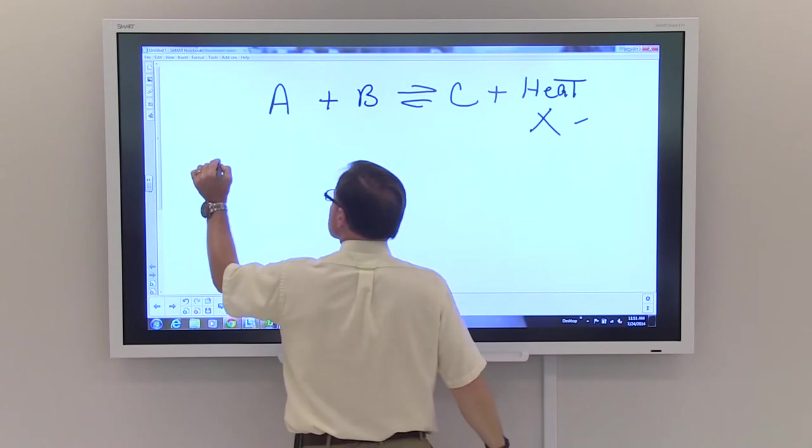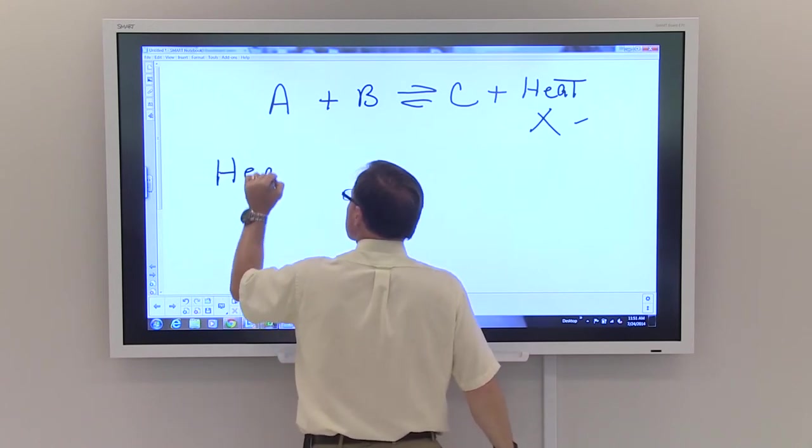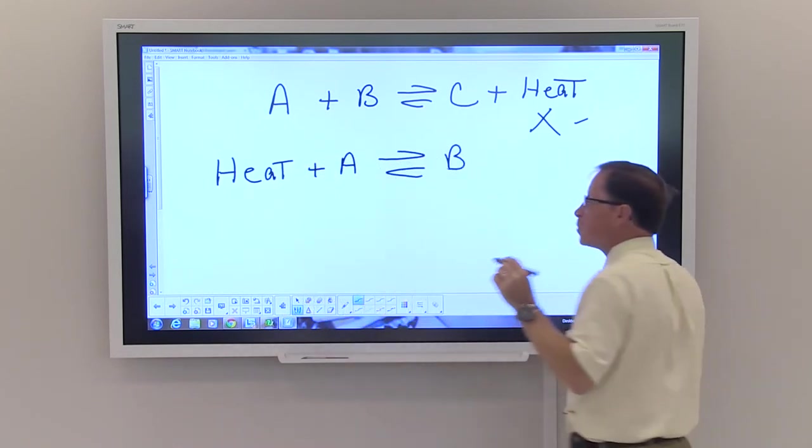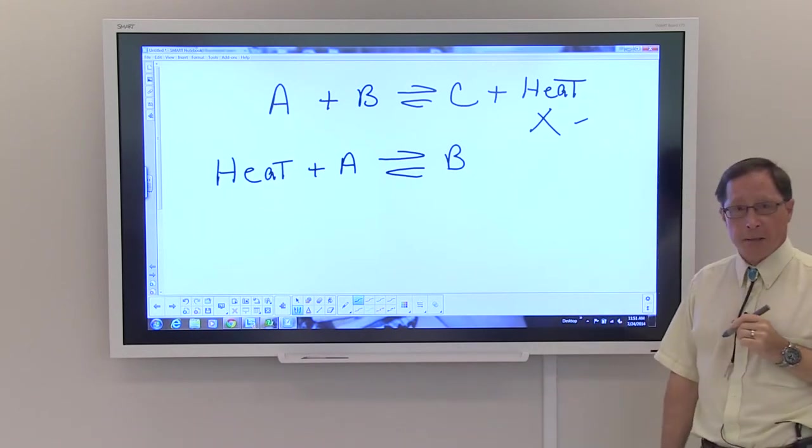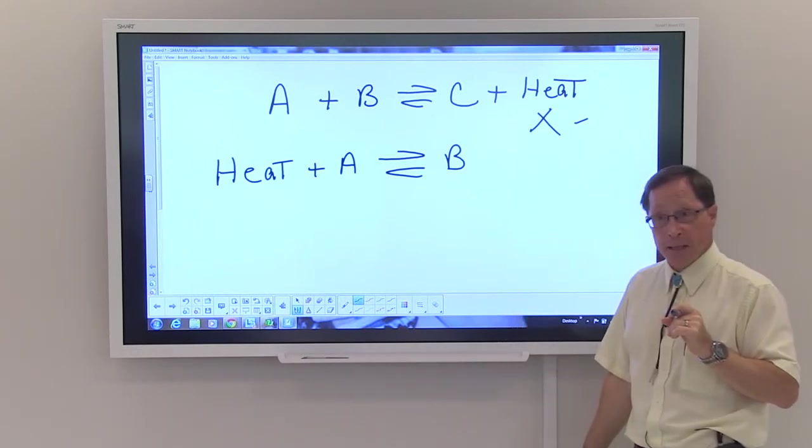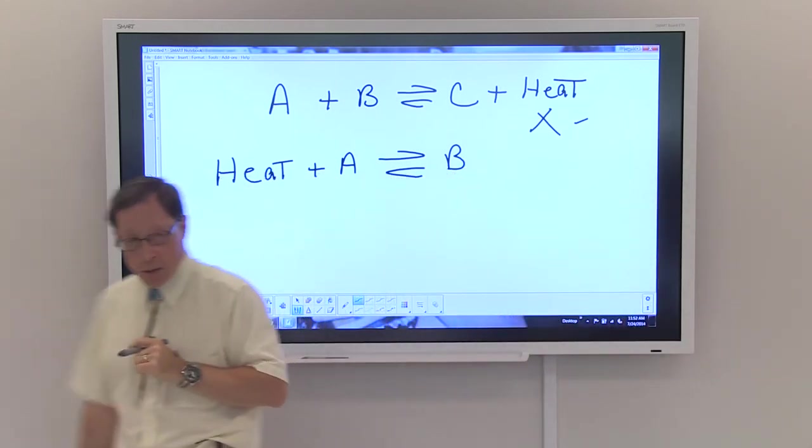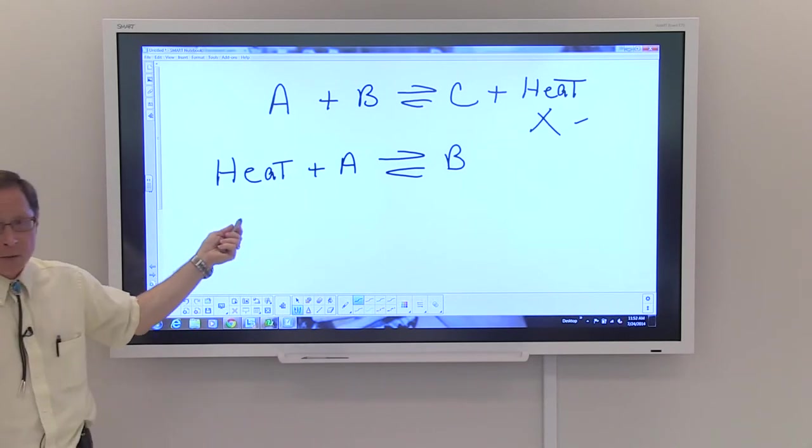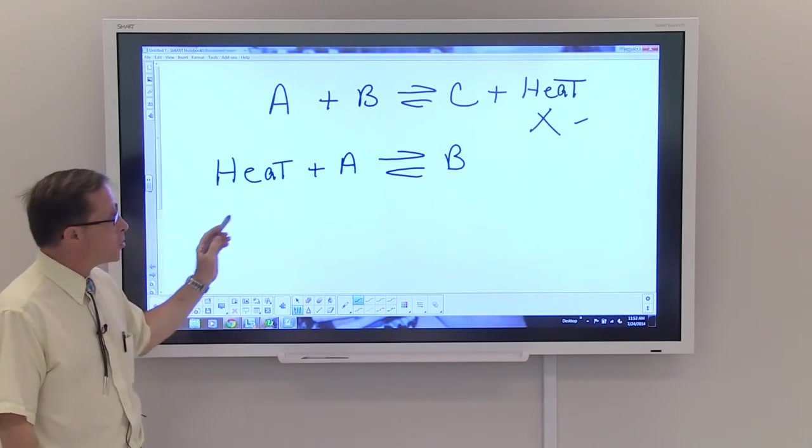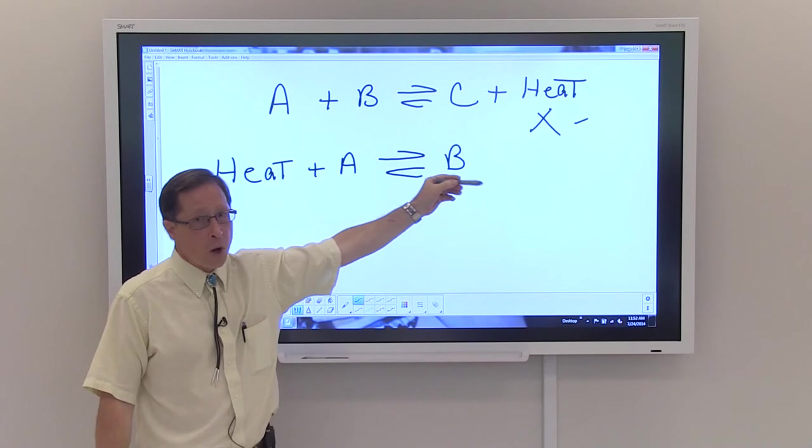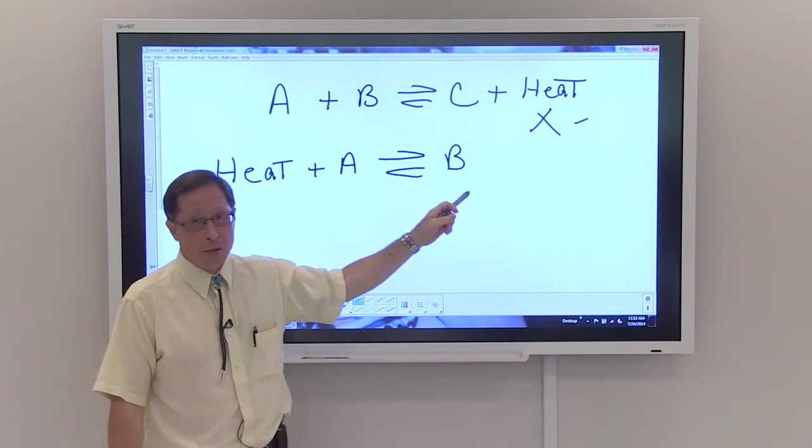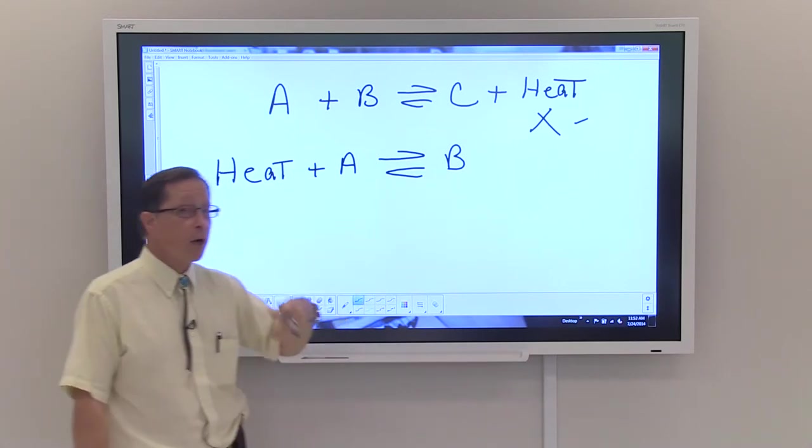If we had heat plus A being in equilibrium with B, what would the result of adding and taking away heat be? We ask ourself this question: Is heat a product or is it a reactant? In this instance, it is a reactant. So adding heat essentially will shift the reaction toward product. In an endothermic reaction, which is what this is, adding heat should shift in the direction of your product. So it would help you form more B.